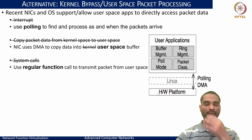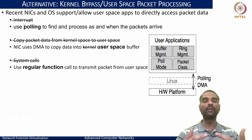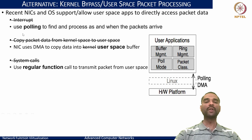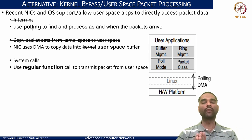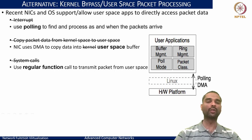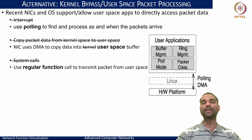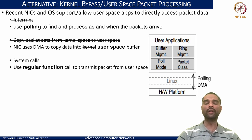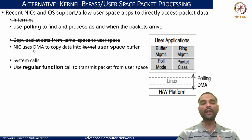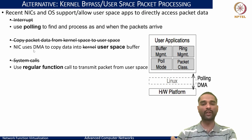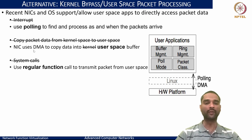Kernel bypass techniques eliminate three key overheads. First, avoid interrupt-based processing — instead of the NIC interrupting the kernel driver, we poll the hardware to detect when packets arrive or push packets directly when ready. Second, avoid copying packet data from kernel space to user space; instead, rely on the NIC's DMA to copy data directly into user-space buffers and vice versa for transmission.